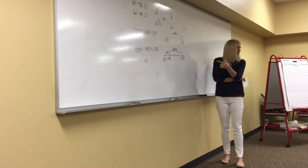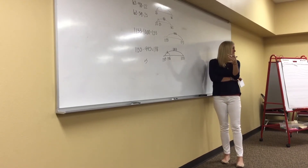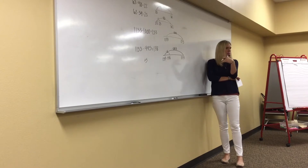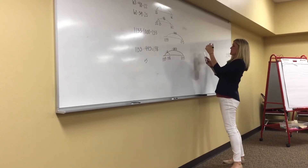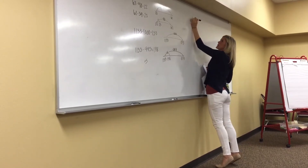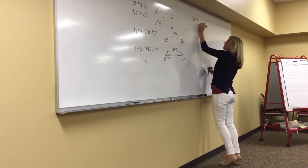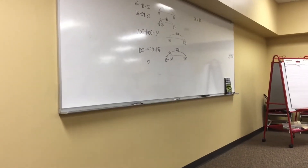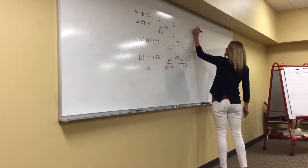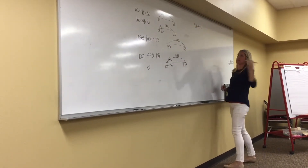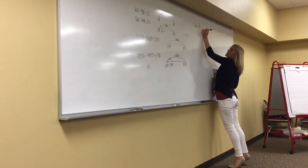Did anyone else do exactly what Becky did — took off a thousand, said 'too much,' and then adjusted? Okay. Now let me ask you: what is 56.6 minus 40? 56.6, or 56 and six tenths, minus 40 — or $56.60 minus $40. What do you get? 16.60.